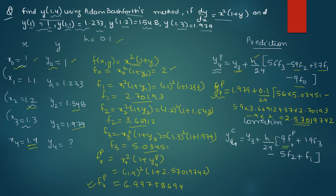Now you have got this, if you substitute this f4 here, you will get the correct value of y4, that means the value of y at x equals 1.4. So what is your y3? It is 1.979.